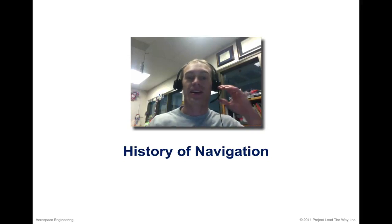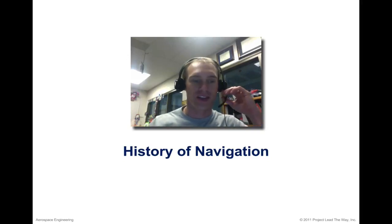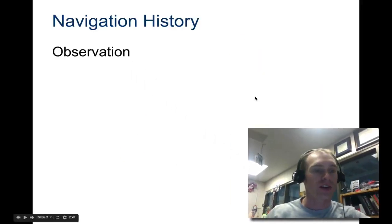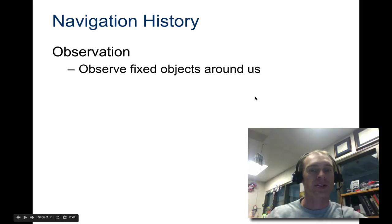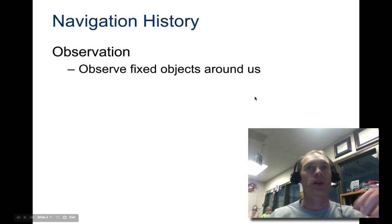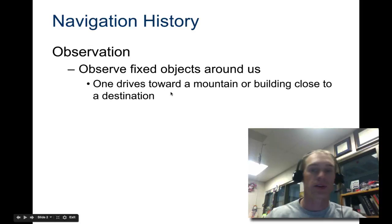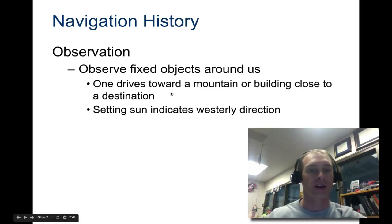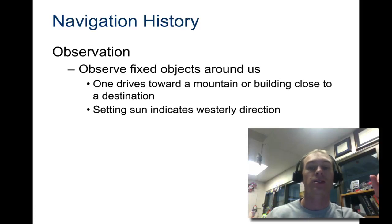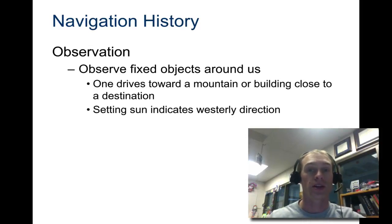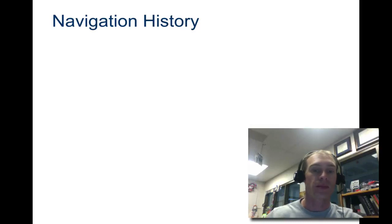Let's take a look at the history of navigation. Navigation started out initially with just observation — looking at what's around us and trying to map from there. You'd drive toward a mountain or building close to wherever you're trying to go. The setting sun also indicates the westerly direction, so the sun was used earliest on for navigation.